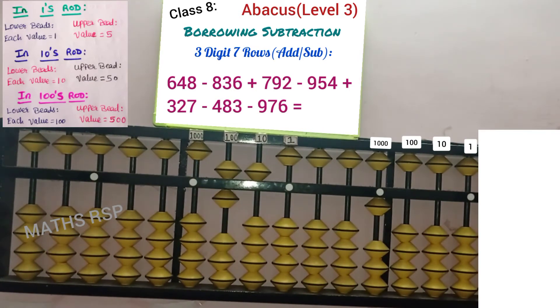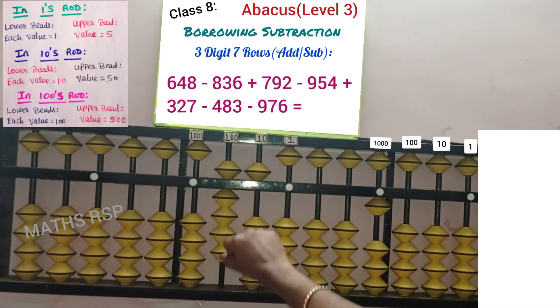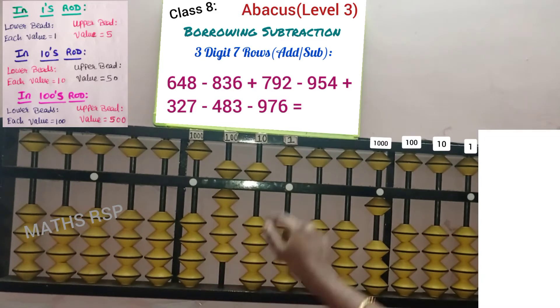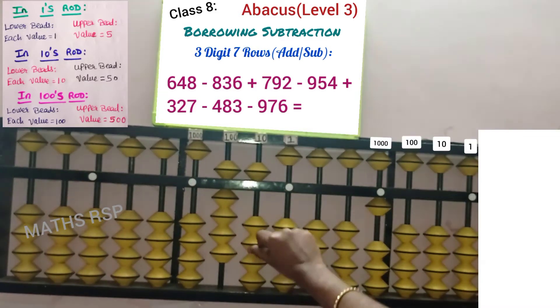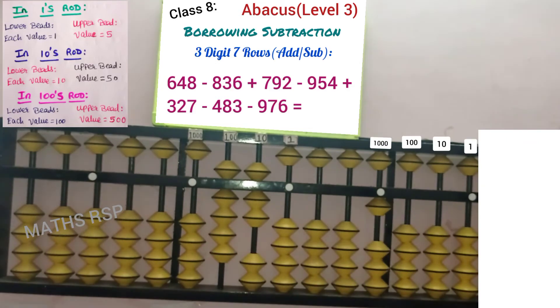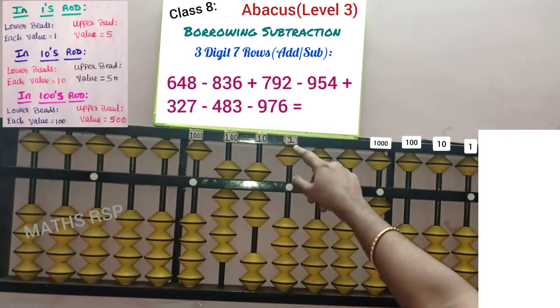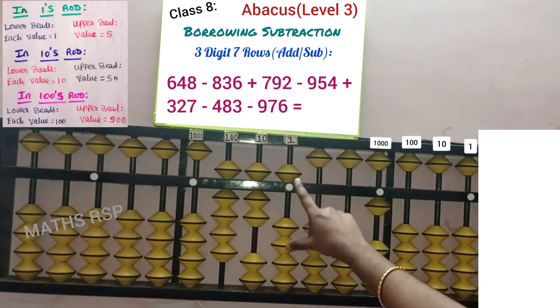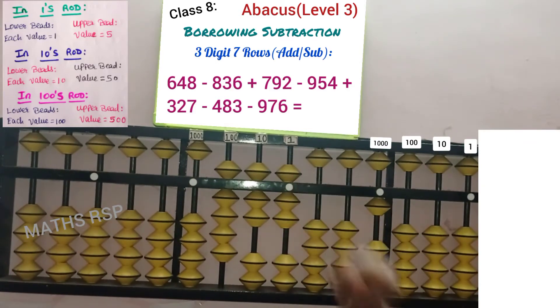Next, 5th row: plus 327. Add 3 beads in the 100 strad, 2 beads in the 10 strad, and 7 beads in the 1 strad — 5, 6, 7. Next, 6th row: minus 483.